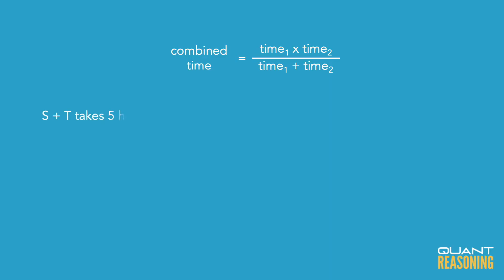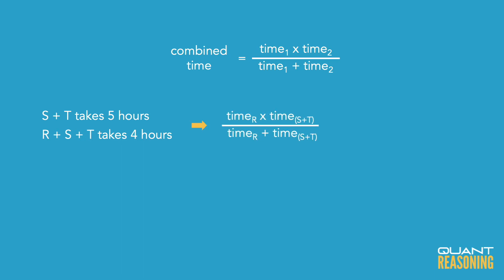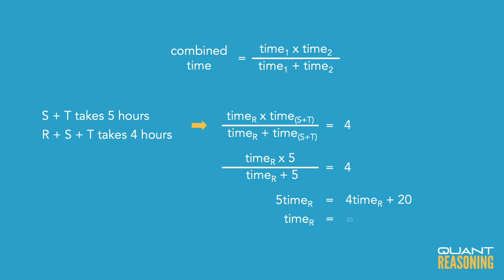Applying that formula here, we can say that the time R takes on its own multiplied by the time that S and T take together, divided by the time that R takes on its own plus the time that S and T take together, is going to equal the time that all three of them take together, which we know is four. Solving this equation for just the time that R takes on its own, we get 20 hours.